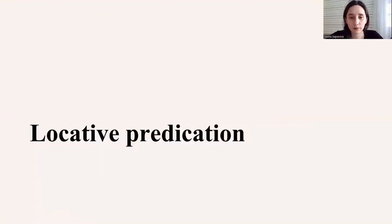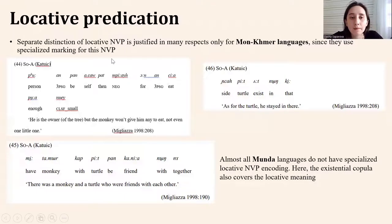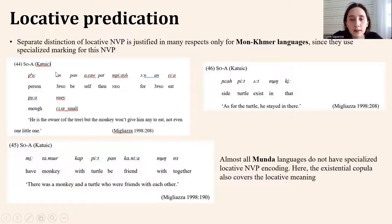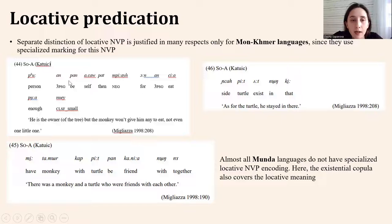Now, locative predication. A separate distinction of locative nonverbal predicates is justified in many respects only for Mnong languages, since they use specialized marking for these nonverbal predicates. In example 44 — 'he is owner' — we can see the copula 'pun' is the equative copula used in this sentence.